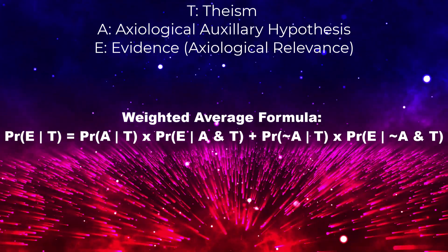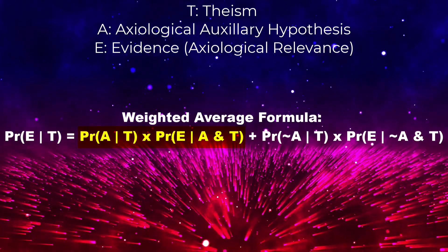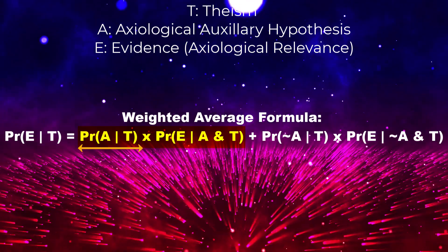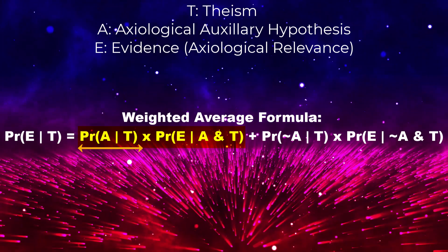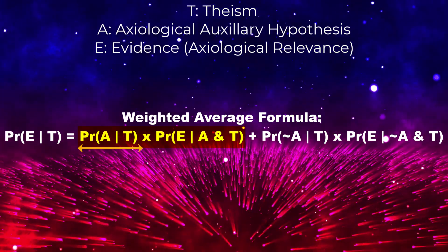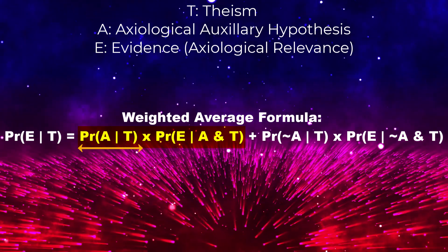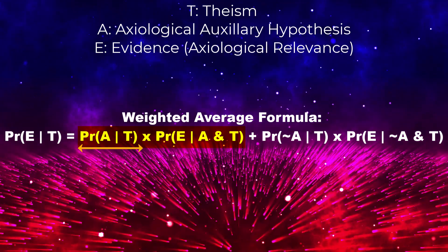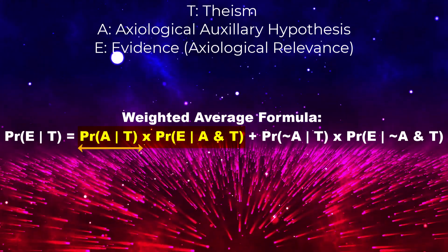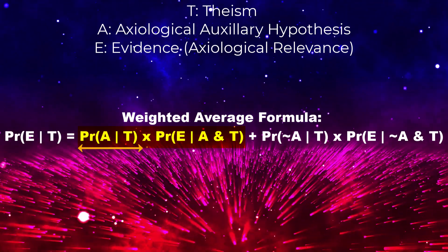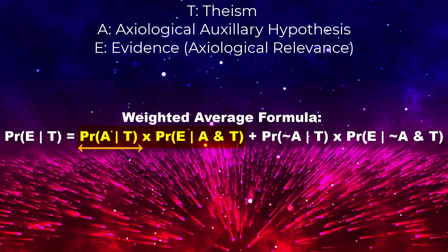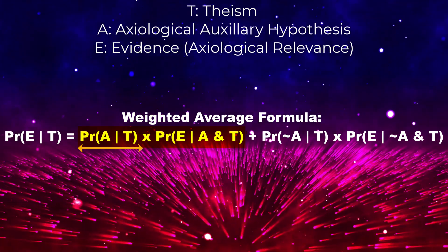The first term is the probability of A conditional on T, multiplied by the probability of E conditional on A and T. The probability of A conditional on T is the probability of the auxiliary hypothesis A being true given theism T. In the context of axiological auxiliary hypotheses, this auxiliary hypothesis posits certain axiological values or principles. Axiological auxiliary hypotheses are additional assumptions that align with theism and provide a framework so that theism can make predictions.